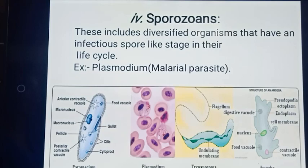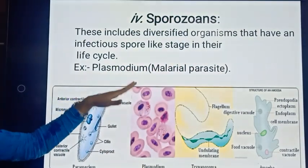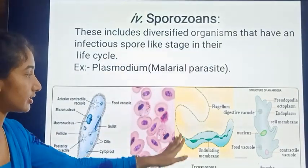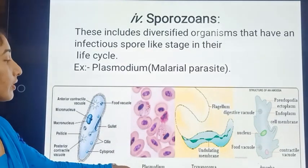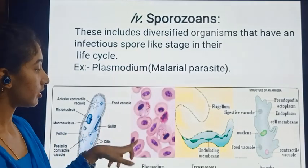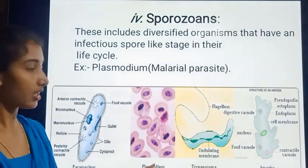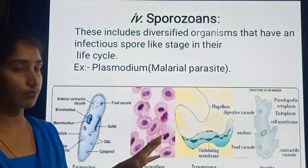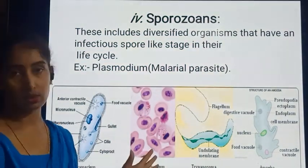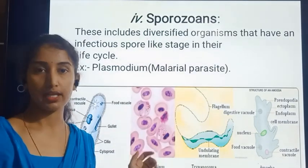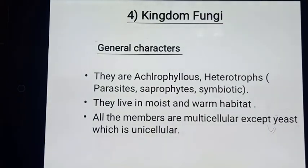Trypanosoma consists of a flagellum for locomotion, which is why it is classified under flagellated protozoa. The last type is Sporozoa, with Plasmodium as the example — the malarial parasite. We observe the Plasmodium malarial parasite here, which has different spore stages and is the causative agent of malaria. This is how we differentiate the types of protozoa.